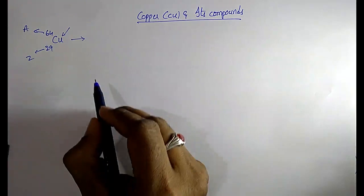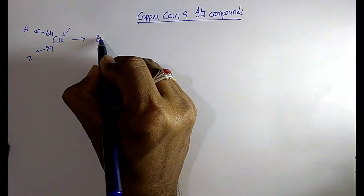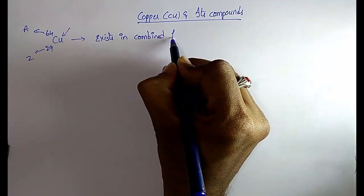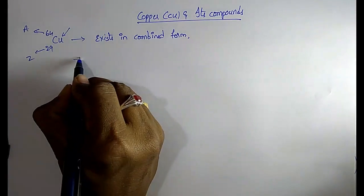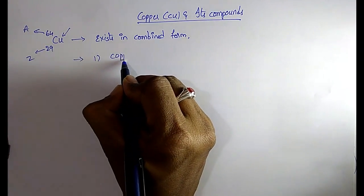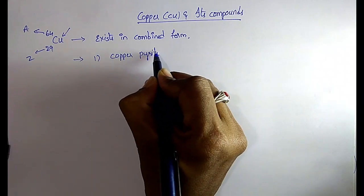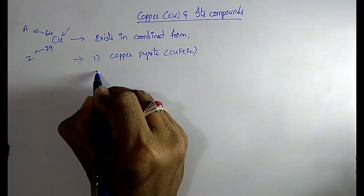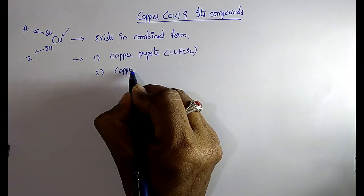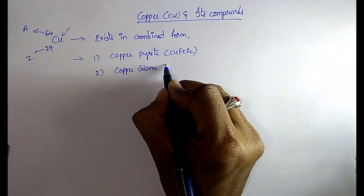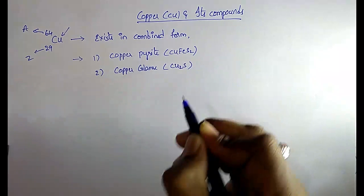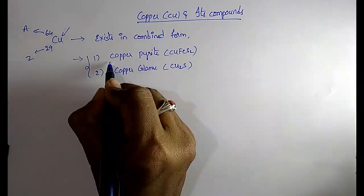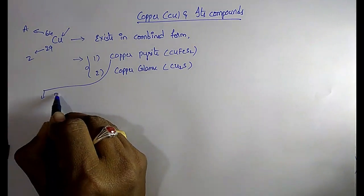Copper exists in combined form because it is a highly reactive material. It is extracted from copper pyrite, which is copper iron sulfate, and also from copper glance. Copper also has ductile property, meaning we can easily make wires from it.